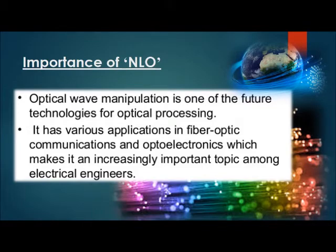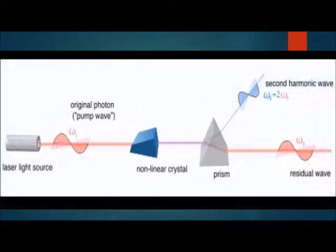Nonlinear optics is the science of materials that do not behave linearly when exposed to light. One of the major applications is a phenomenon called second harmonic generation. Second harmonic generation is a phenomenon in which certain crystals exhibiting nonlinear behavior combine two photons to form one new photon when exposed to light at a certain angle. This allows the production of light at some frequency from a source of half that frequency.